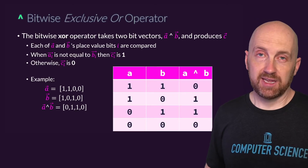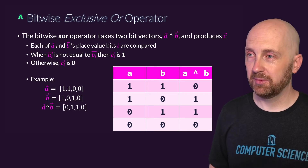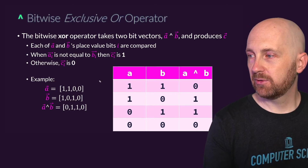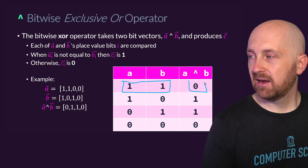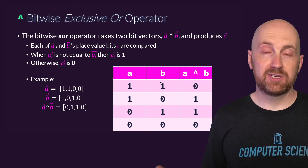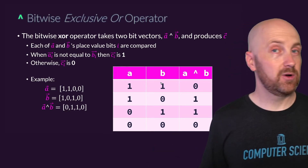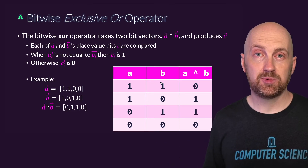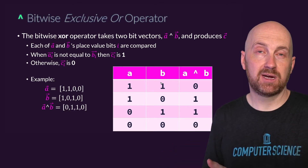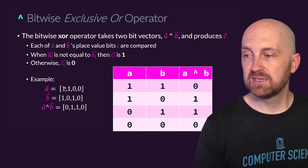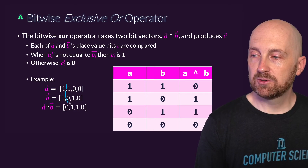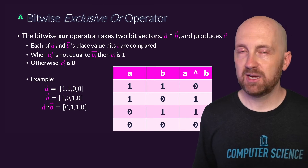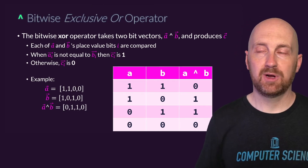Exclusive OR is really interesting and has some fascinating uses in systems programming; it comes up quite a lot in encryption techniques as well. Unlike regular OR, if you have two ones at the same bit position, exclusive OR gives zero — only one of the two bits can be one at that position. You could replicate this using AND and OR with logical operators, but it's built into most languages. The truth table: one XOR one is zero, one XOR zero is one, zero XOR one is one, and zero XOR zero is zero.